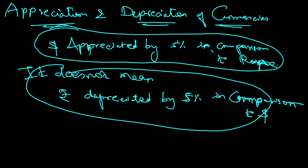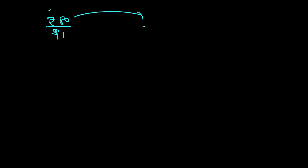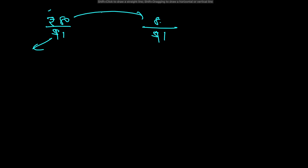Let us see with an example. Say for example, imagine right now one dollar is 80 rupees and it goes to one dollar equals 85 rupees. The base currency is dollar. Initially we required 80 rupees for the base currency dollar; now we require 85 rupees. So the base currency is becoming more expensive — that means base currency is appreciated.